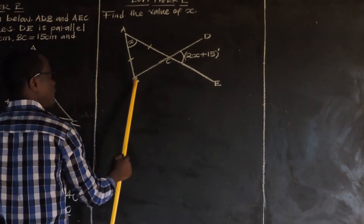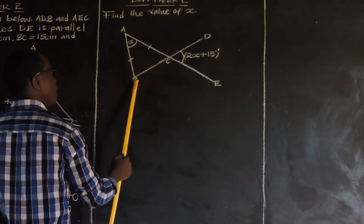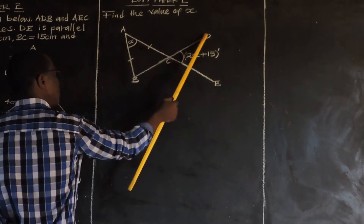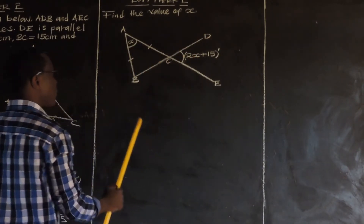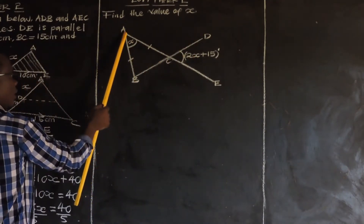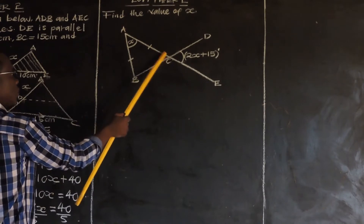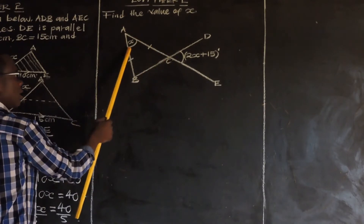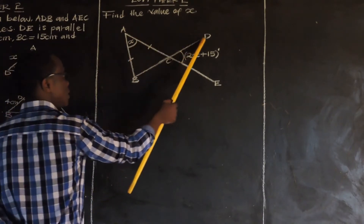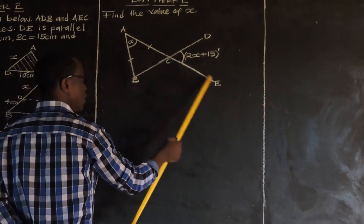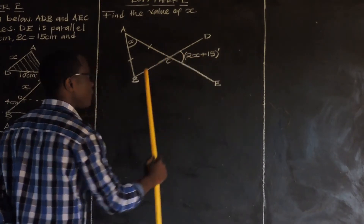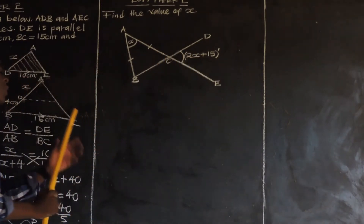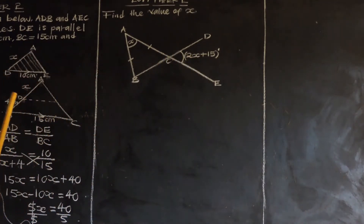A, C, E and B, C, D are straight lines. Then angle B, A, C is X. Then angle D, C, E is 2X plus 15 degrees. We have been asked to find the value of X.